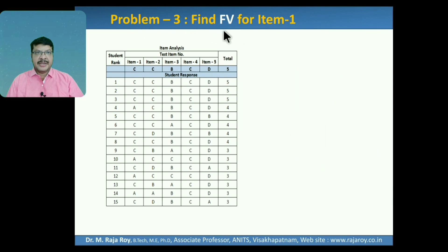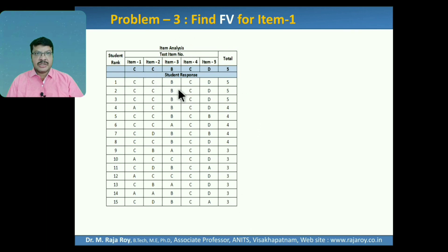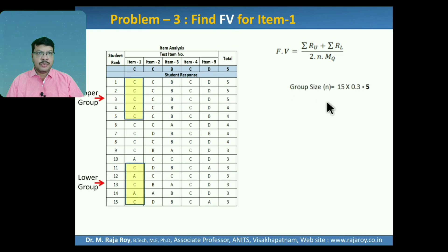Next problem: find the FV value for item 1. This is a multiple choice based question paper. The ranks of 15 students are given in descending order — top scorer to least scorer. Marks allocated to each question is 1 mark. First step for finding FV: group size equals 15 into 0.3, which gives approximately 4.5, rounded off to 5.